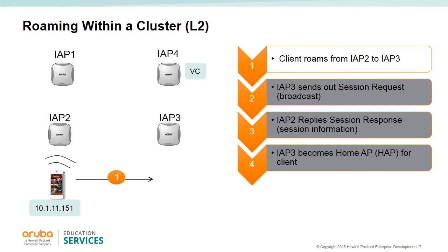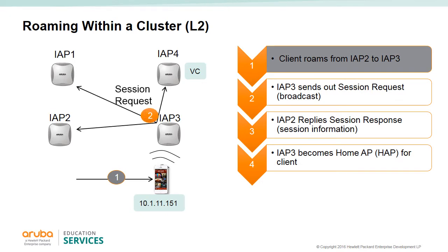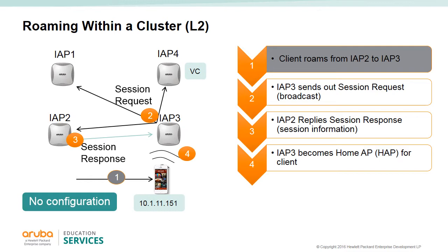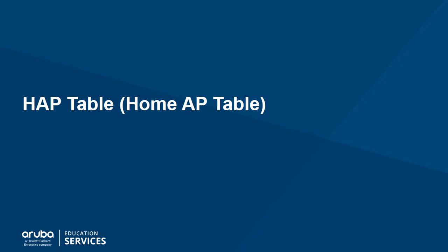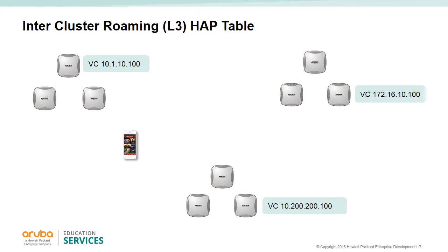L2 roaming, or cluster roaming, is when a client roams from one AP to another AP in the same cluster. In this example, the client has roamed from AP2 to AP3. Upon receiving the new client, AP3 will send a session request as a broadcast in its cluster. AP2 will reply with a session response message giving AP3 all of the session information. AP3 is now the new home AP for this client. All ACL IDs and current active sessions are passed in session reply messages. Roaming typically happens in less than a second with no ping loss. No configuration is needed for cluster roaming.